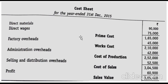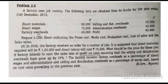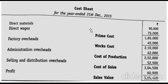After prime cost, we check factory overheads. In this question factory overheads are given directly as 45,000. So prime cost plus factory overhead: 1,65,000 plus 45,000 gives works cost of 2,10,000.